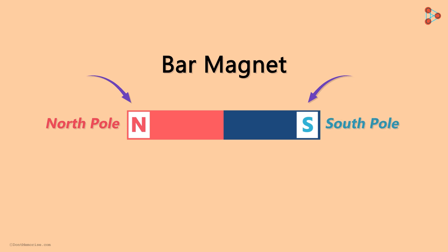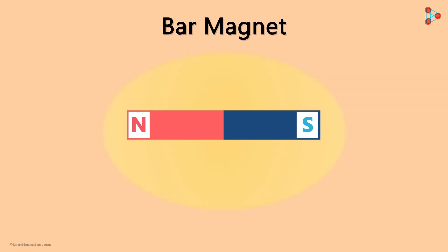From the last video, we now know that there is an invisible magnetic field surrounding it. And if you place any magnetic material in this field, then it will be attracted towards the magnet.